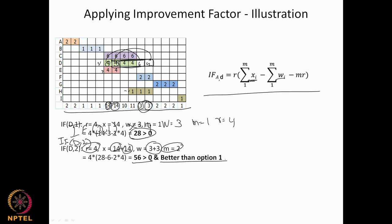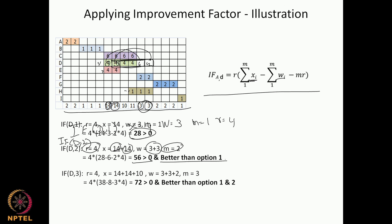I go on to now trying to shift D by 3 days. What happens over 3 days is Sigma X becomes 14, 14, and 10. On this side I have W as 3, 3, and 2. My shift is for 3 days, and R still remains at 4. Substituting back in the formula I get an even better improvement of 72 — better than option 1 and better than option 2.